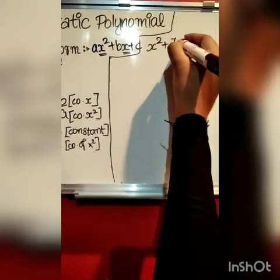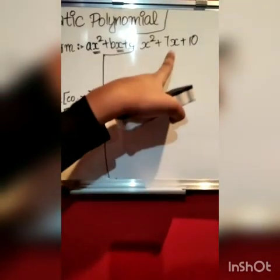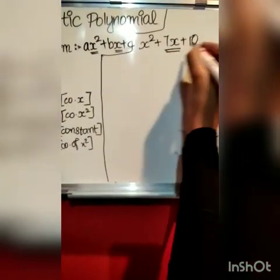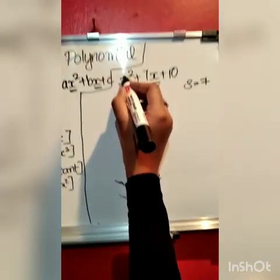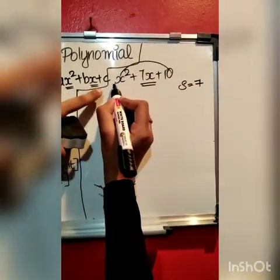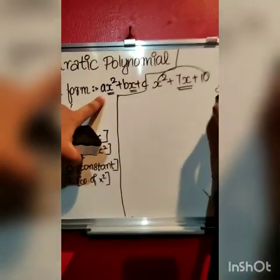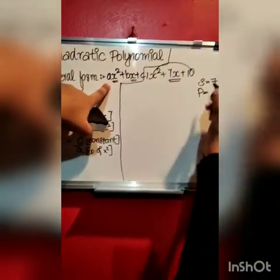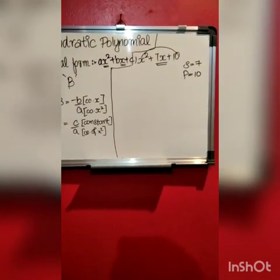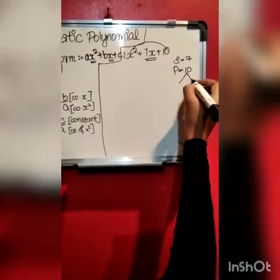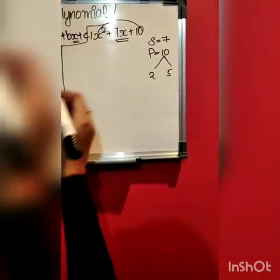Consider x² plus 7x plus 10. The middle term gives us the sum. So, sum is equal to 7. And for the product, we multiply the first and last terms: 1 into 10 is 10. So we will factorize this. We get 2 into 5 is 10, and 2 plus 5 is 7.